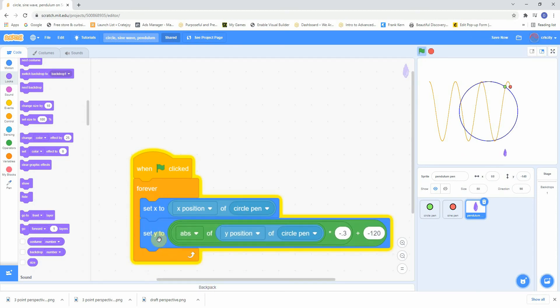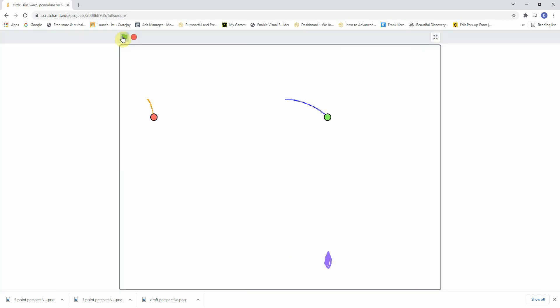So we've got the pendulum and the sine wave coming from a simple circling motion.